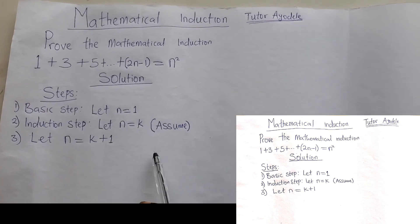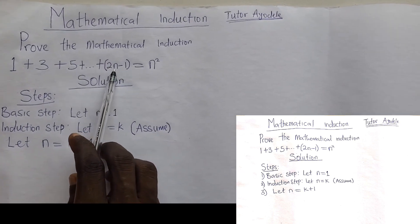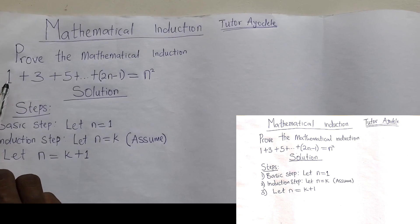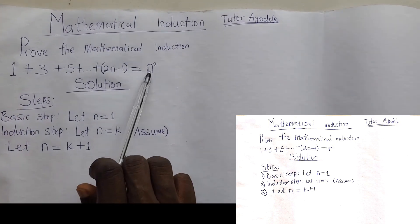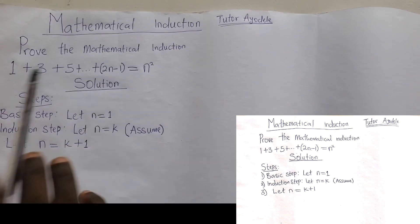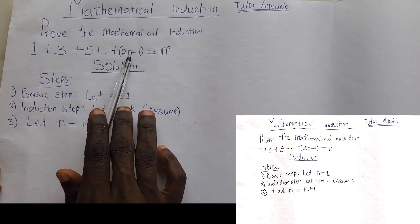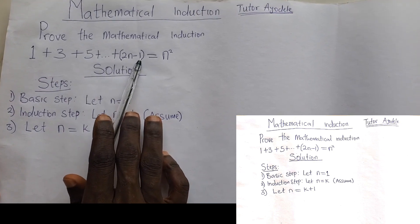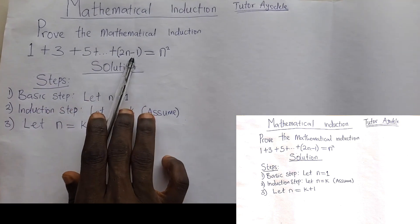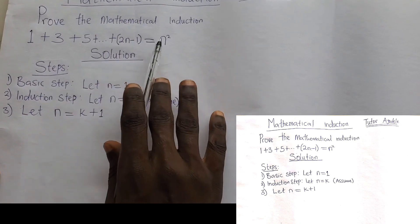Let me tell you some hidden facts that you don't know in mathematical induction. You see this equation here — this formula is used to derive each of these terms, while this one is for the sum. If n equals 1, this becomes 2 times 1 minus 1, which is 1. If n equals 2, it gives you that. If n equals 3, after simplification, it gives you that.